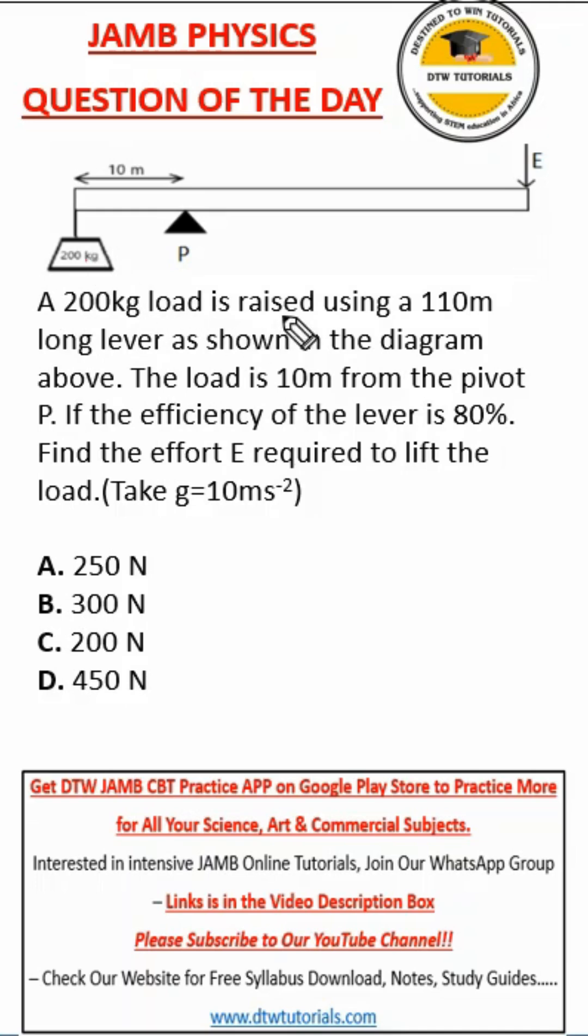Let's read the question. It says a 200 kg load is raised using a 110 meter long lever. The total length is 110, so if from here to here is 10 meters, it means from this side to this side is 100. We've resolved this.